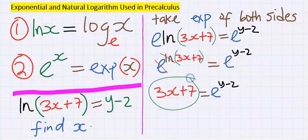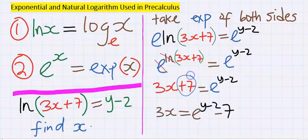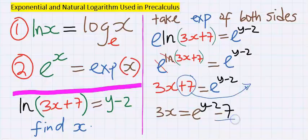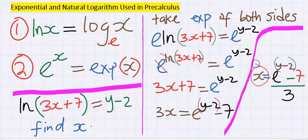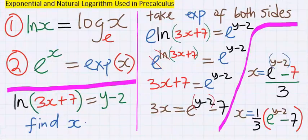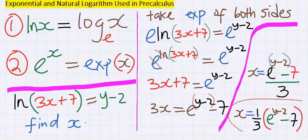And 3x plus 7 is now free. Plus 7 will move across to become minus 7. X is now isolated and we can rewrite this as in this order, which is our answer.